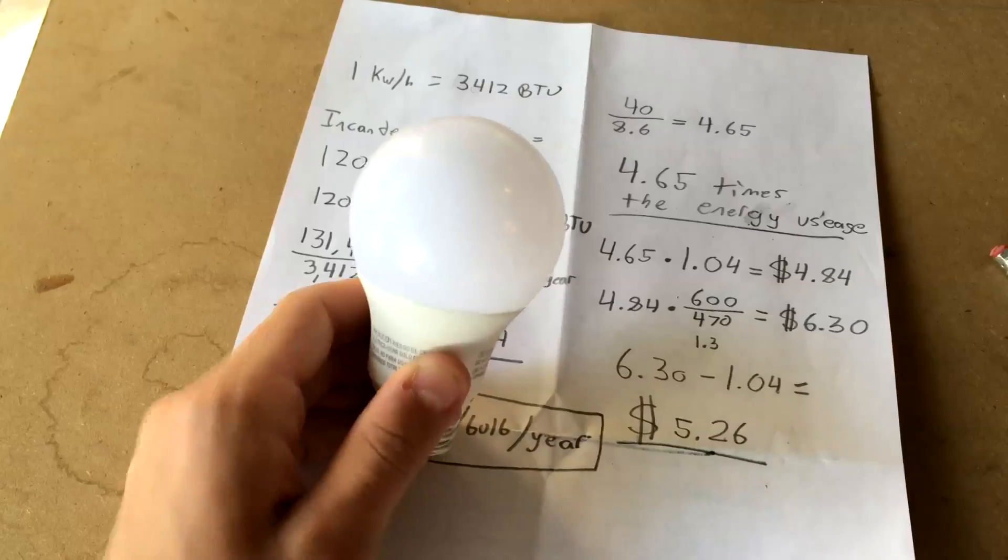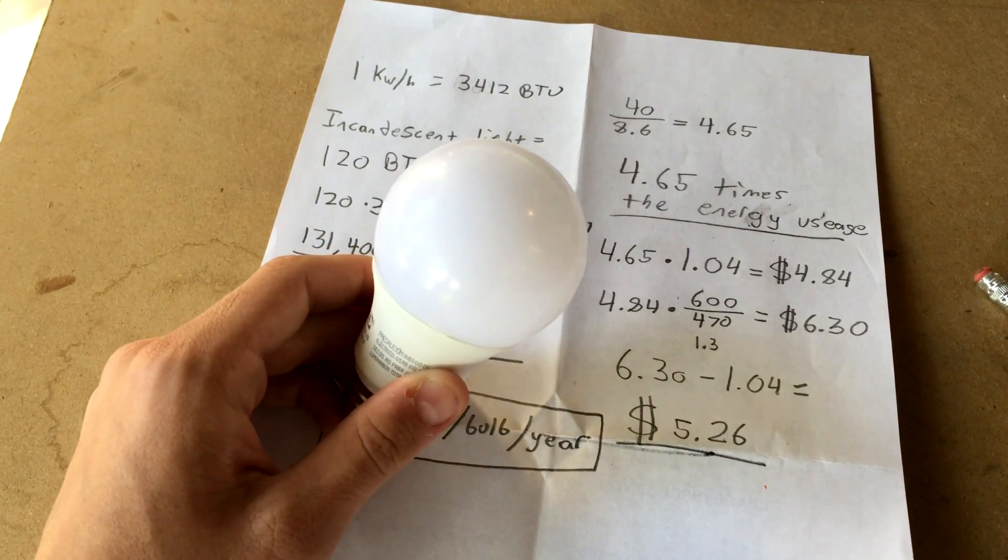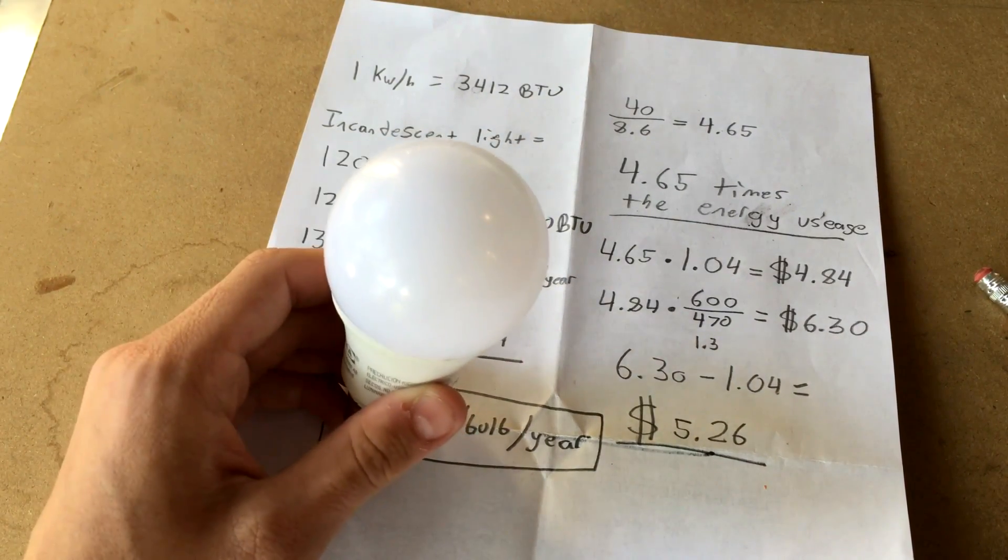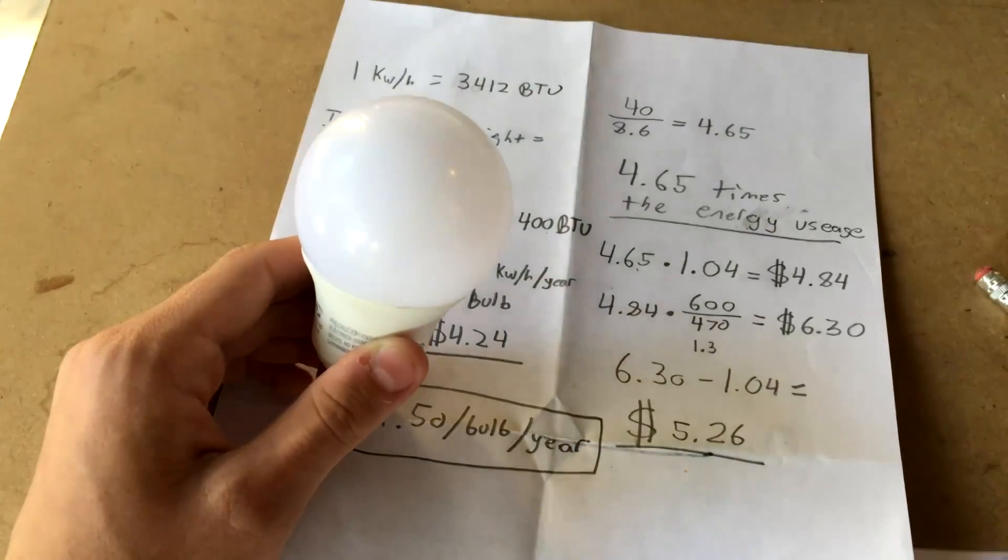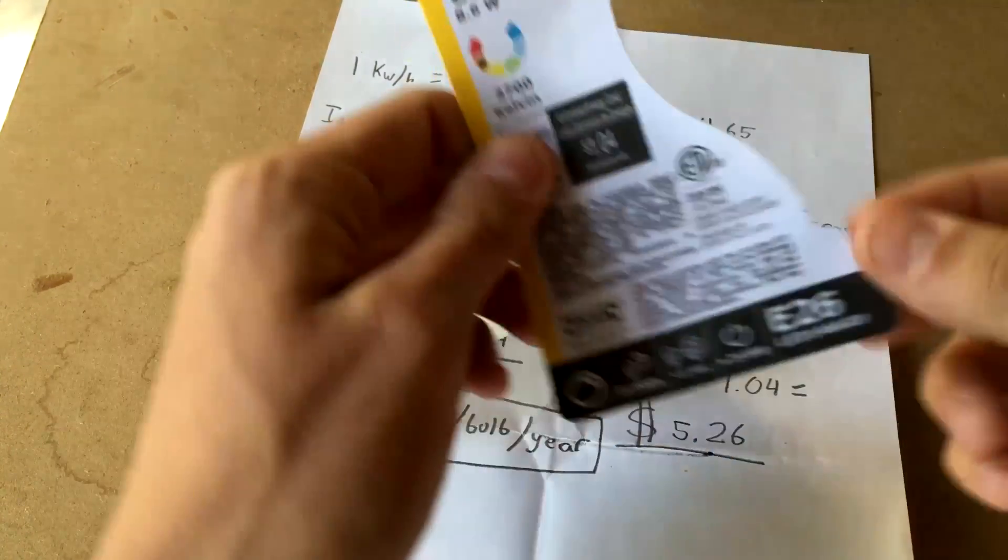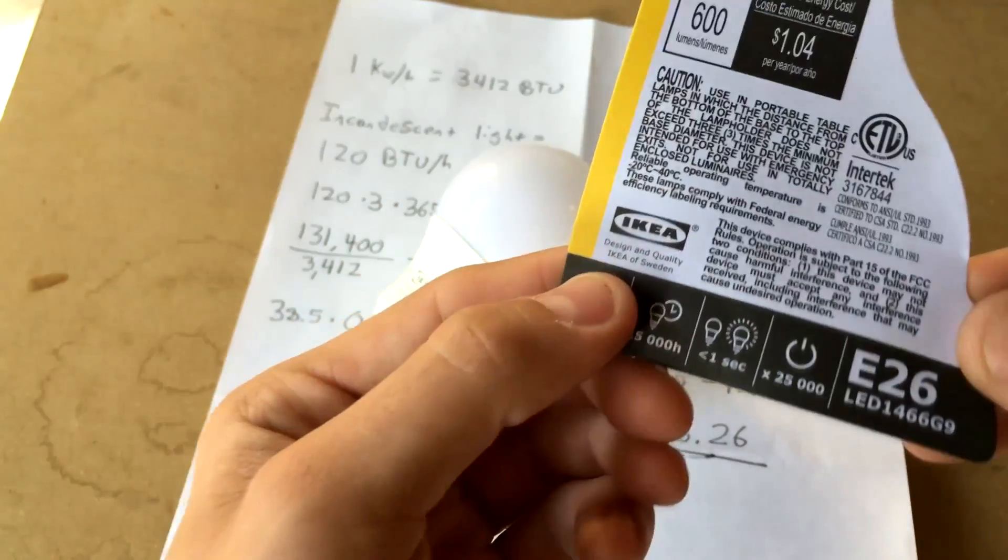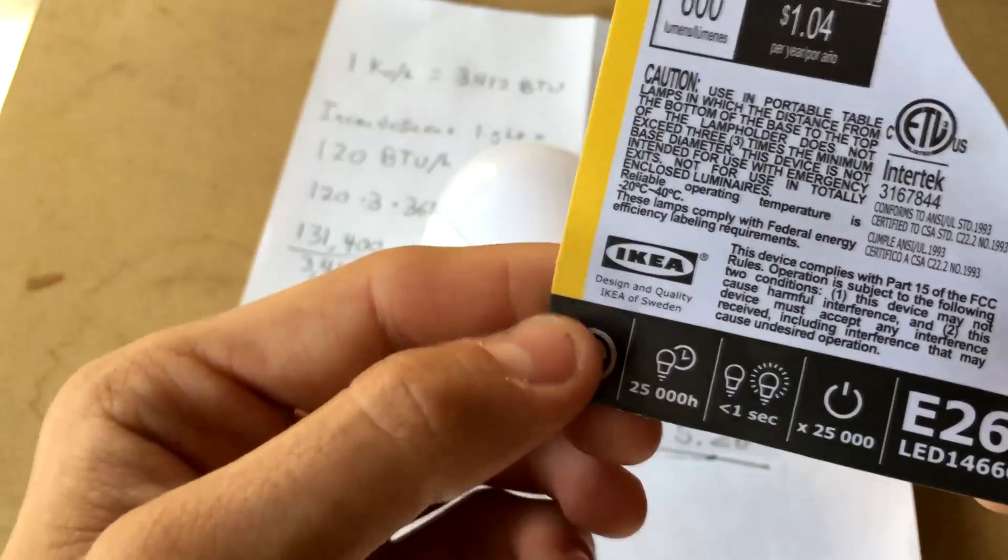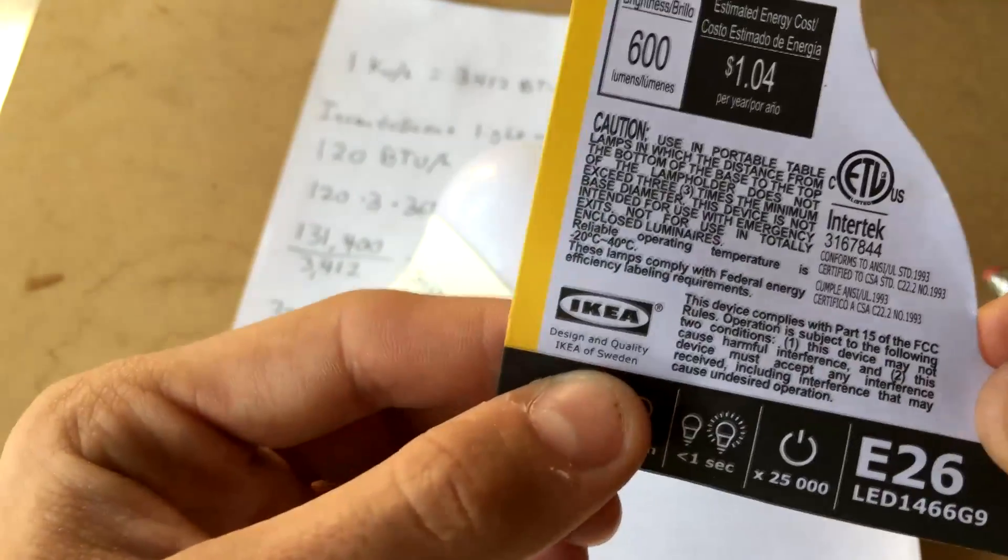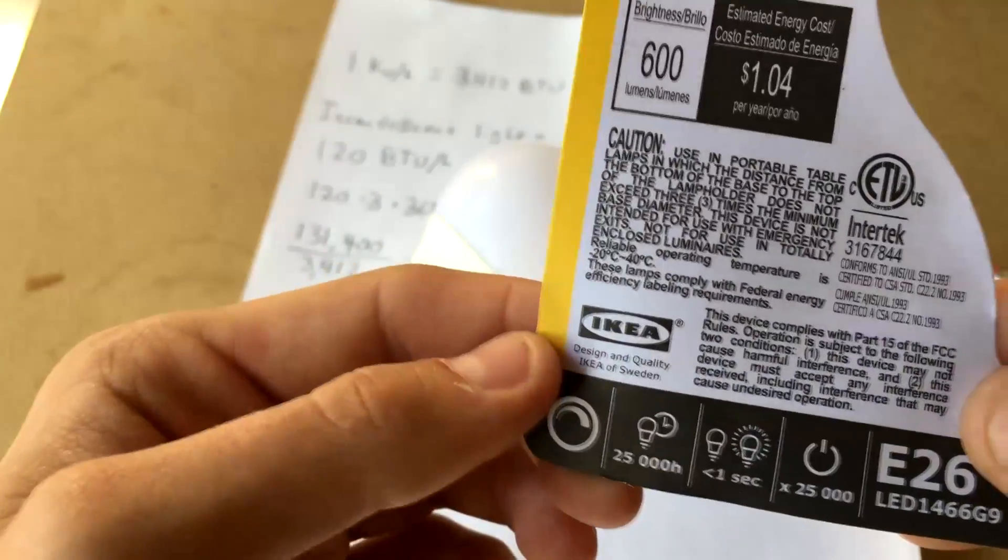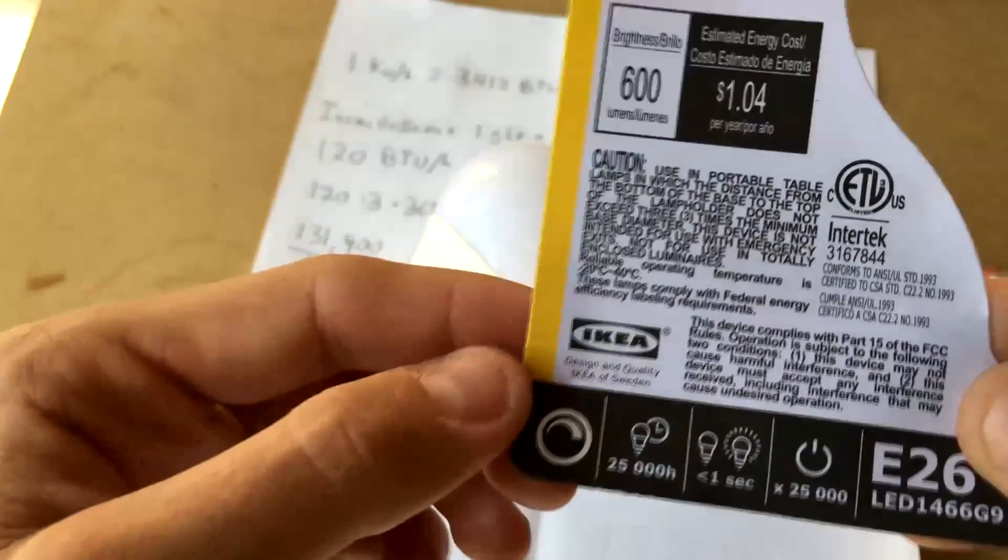Now you might be wondering, well Ben, aren't LED light bulbs super expensive? And actually, no. I bought these LED light bulbs from IKEA. IKEA is originally from Sweden but they're all over Florida here and we've got a local one in Tampa. If you don't have one locally, you can also buy LED light bulbs online pretty inexpensively.